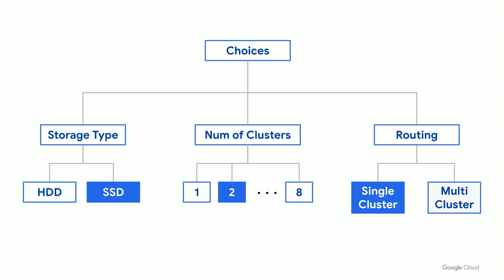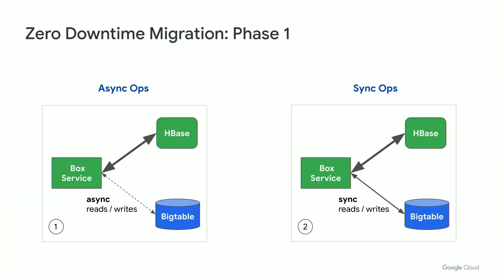Next, for routing, we had to decide whether to rely on the automatic multi-cluster routing or go with single cluster routing and handle failover ourselves. We had to go with single cluster routing because the use of conditional writes in our applications was incompatible with multi-cluster routing. Now let's look at the actual migration process. Given the critical nature of our services, this needed to be a zero downtime migration — we had to migrate without disrupting user traffic and without affecting latencies.